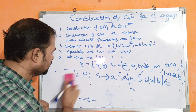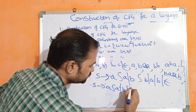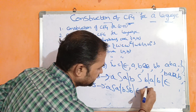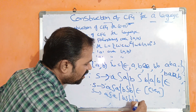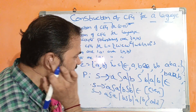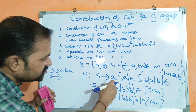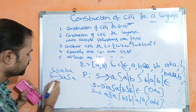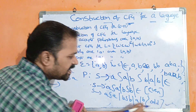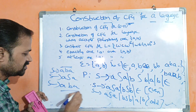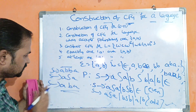For even-length palindrome the productions are S implies ASA, BSB, epsilon. For odd-length: S implies ASA, BSB, A, or B. Let us verify with ABA: S implies ASA; in place of S we substitute B (odd-length), giving A B A. For the even-length example ABBA: S implies ASA, then S implies BSB, then S implies epsilon, giving A B epsilon B A = ABBA.